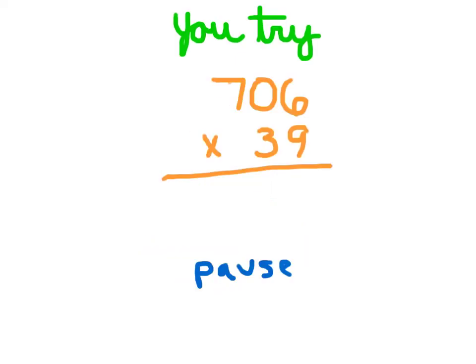All right, here's one for you to try. 706 times 39. Go ahead and set it up and solve it. Do hit pause. First step is 9 times 6, which is 54. Of 4, regroup the 5.